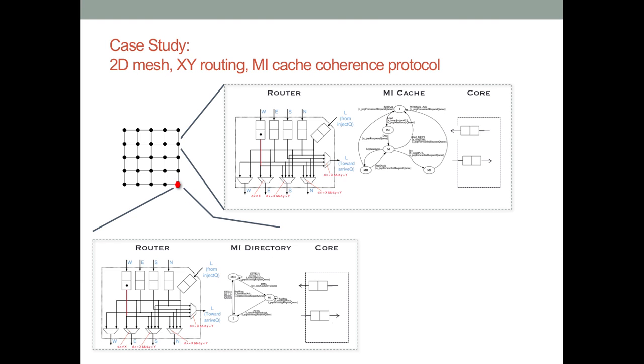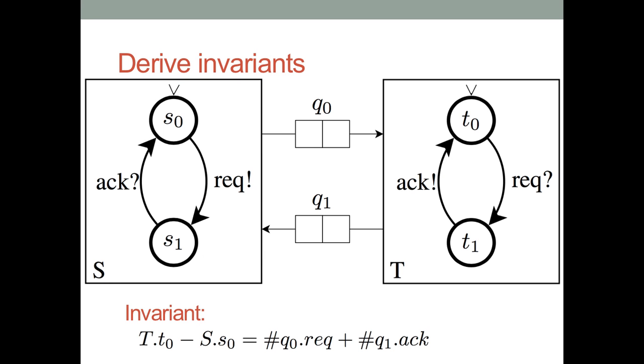I will show one example of such a cross-layer invariant. Here we have an example where we have two state machines communicating with each other through a communication fabric. The communication fabric consists of two queues, Q0 and Q1. And both the processes, process S sends out requests and waits for acknowledgments, whereas process T waits for requests and then sends out an acknowledgment.